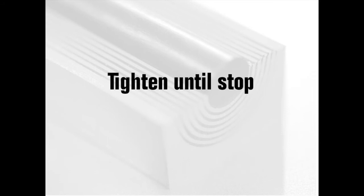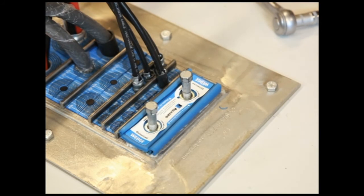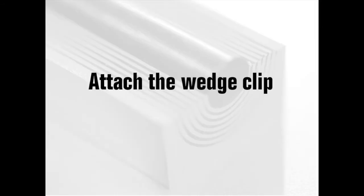Tighten the bolts alternately until stopped. The wedge will compress and seal the transit and the excess lubricant will be squeezed out. Attach the wedge clip to check that the wedge is properly tightened.